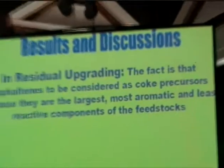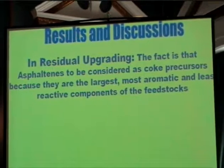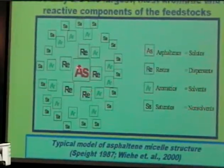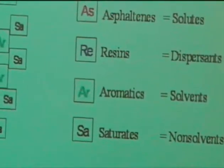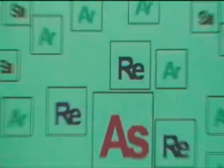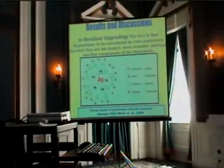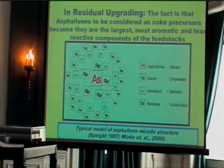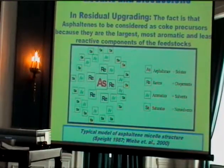In residual oil upgrading, asphaltene is considered a coke precursor because it is the largest, most aromatic, and least reactive component of the feedstock. This is the model proposed by Speight: the asphaltene core is in the middle — the aromatic part — surrounded by resins, then aromatics and saturates. During hydrotreating, the saturates and part of the resins will be hydrotreated, and the remaining part will be the more aromatic asphaltene fraction.